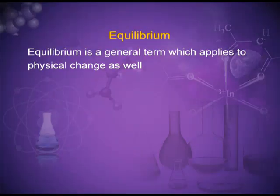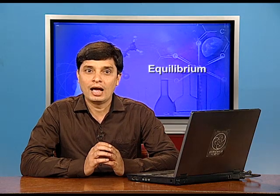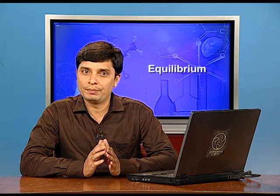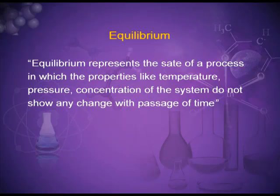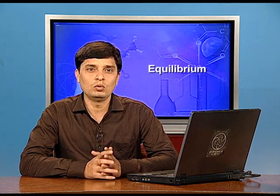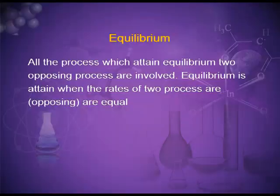Equilibrium is a general term which applies to physical change as well. For example, ice and water are in equilibrium at 0 degrees Celsius. Equilibrium represents the state of a process in which properties like temperature, pressure, and concentration of the system do not show any change with passage of time. Equilibrium is attained when the rates of the two opposing processes are equal.